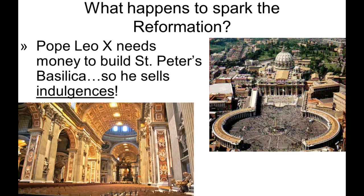St. Peter's Basilica had fallen into disrepair — it had not been maintained for several hundred years. So Pope Leo said, let's rebuild it. It did not look like this at all back in the 1500s when it first started. He needed to make some money, so he started to sell something called an indulgence. This made a lot of people very mad.